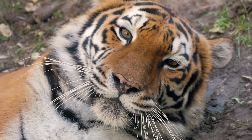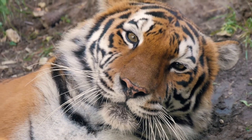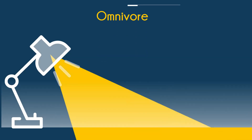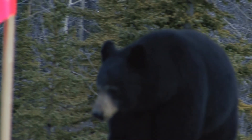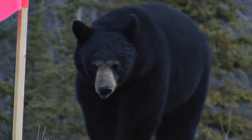And finally, an omnivore is an organism that derives its energy and nutrient requirements from a diet consisting of animal tissue and plants. And there's an omnivore.